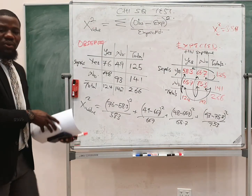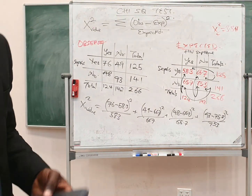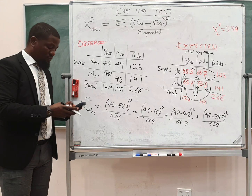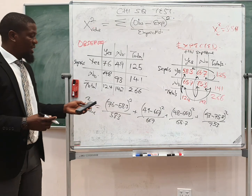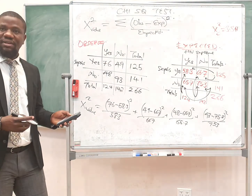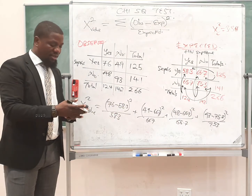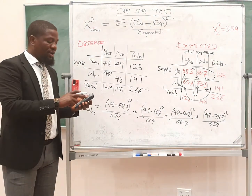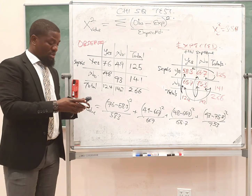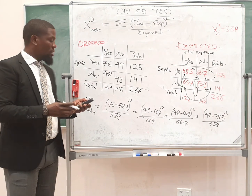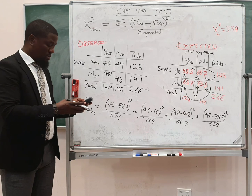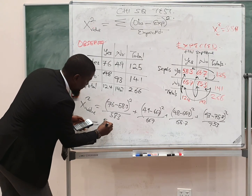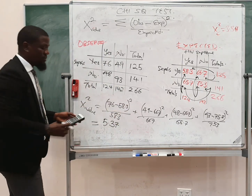So let's go ahead and work this one out pretty quickly. 76 minus 58.3 — the answer is going to be 17.7. The difference is 17.7, so this squared gives you 313.29, then divide by 58.3, and your value here is going to be 5.37. That is the value for the first cell.